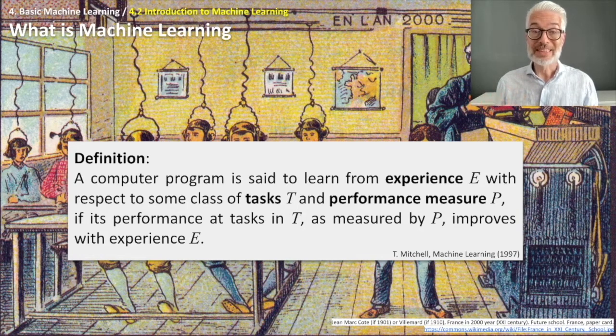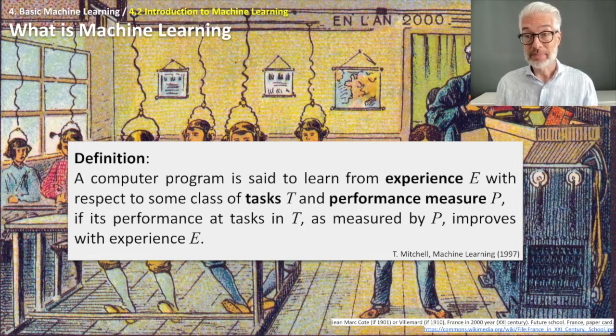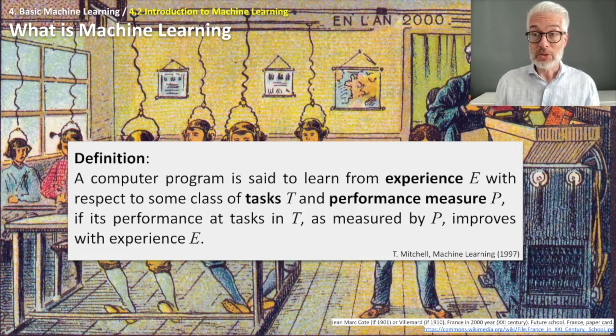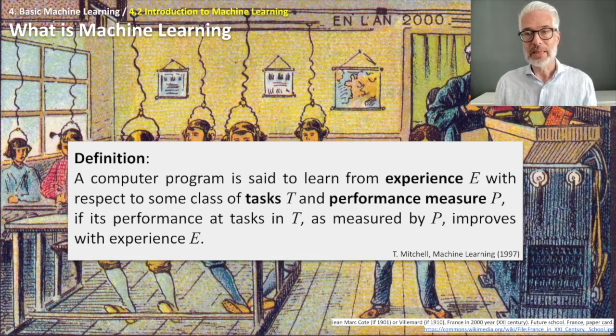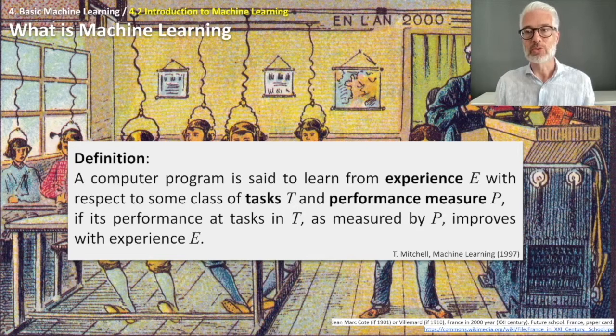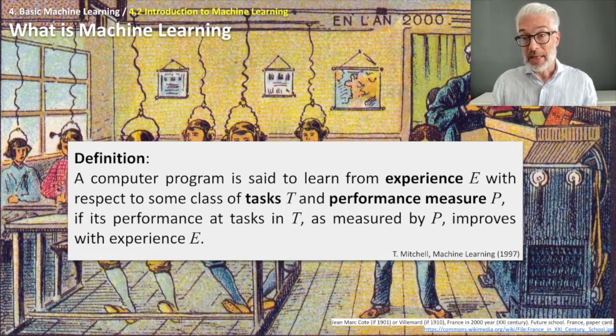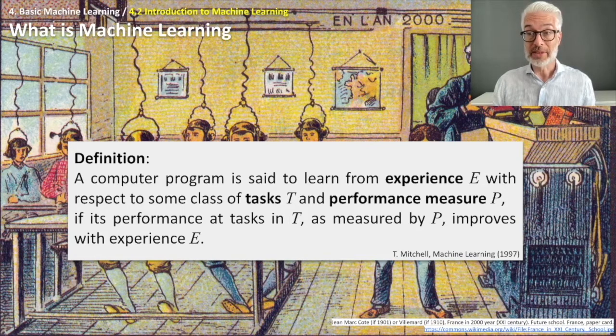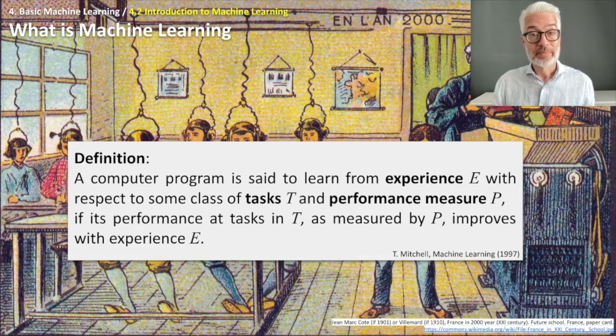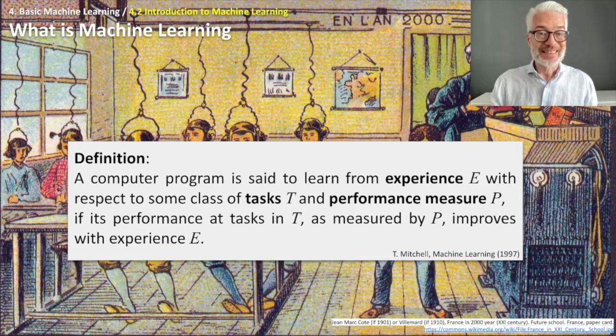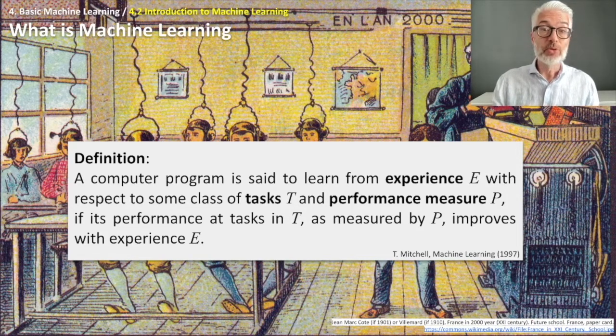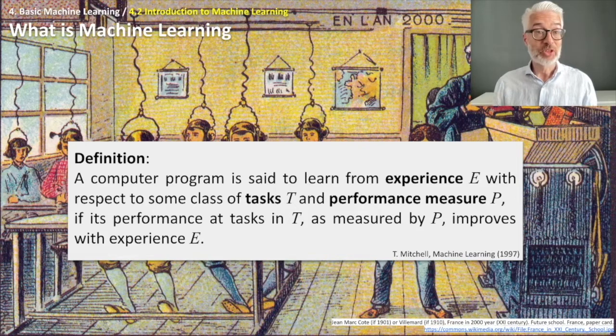With respect to some class of tasks T. What kind of tasks? Usually we try to classify something—whether there's a risk or no risk of getting an illness—recognize specific objects, or learn to play chess. And performance measure P, typically some kind of accuracy measure, the percentage of correct estimates on previously unseen data.